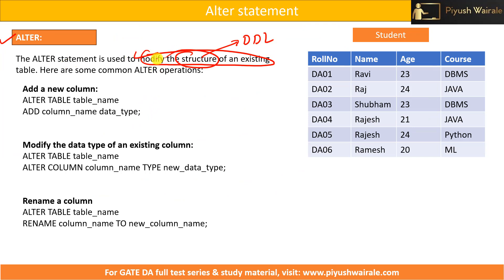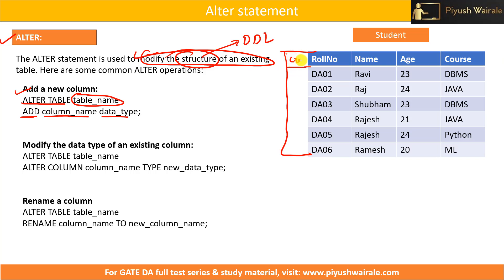Suppose I have a student table and I want to add a new column. I can use: ALTER TABLE student ADD COLUMN credit INTEGER. If I run this query, the credit column will get added to the student table. Please remember this syntax.